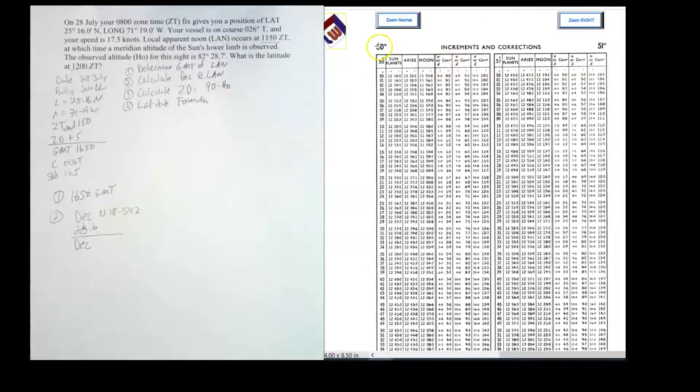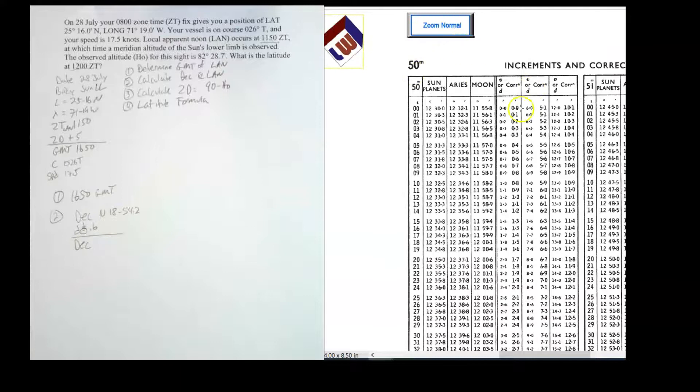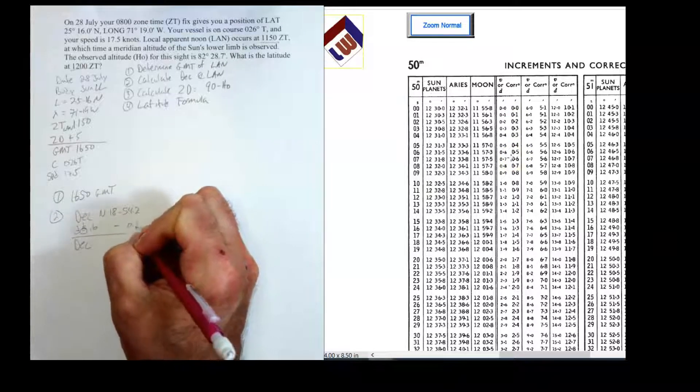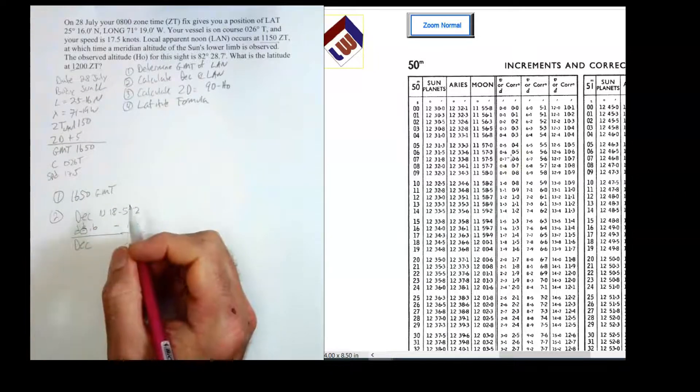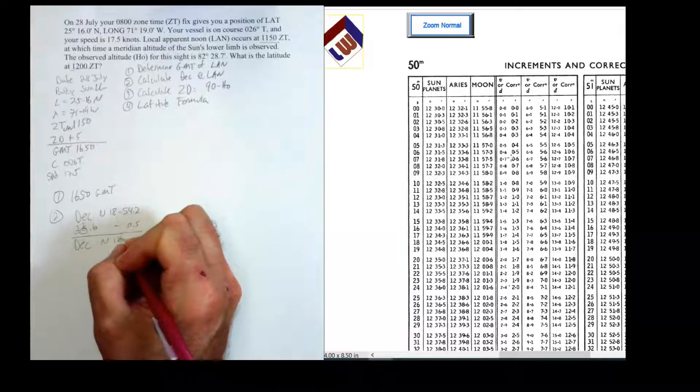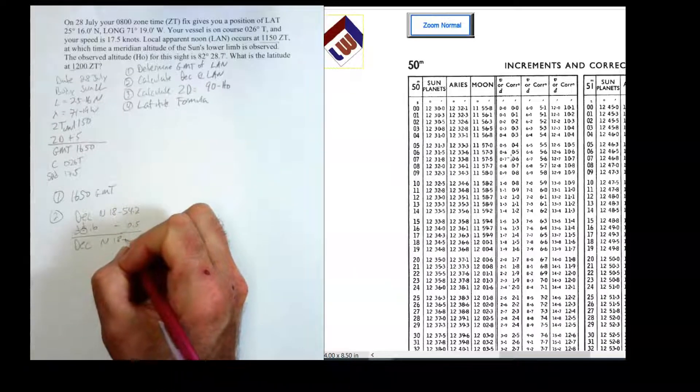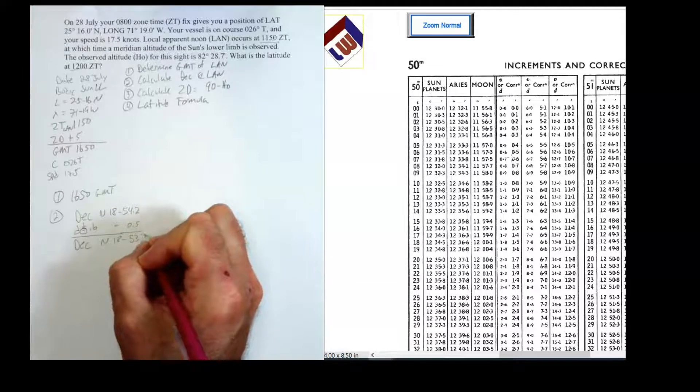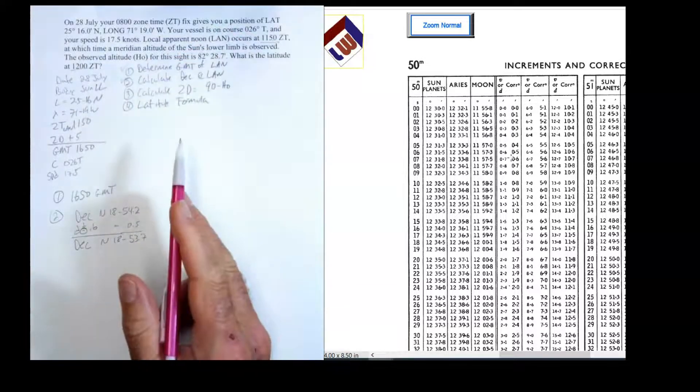So now what I'm going to do is I'm going to go to the back of the book, and I'm going to go to the 50-minute page, and I'll get the D factor for that. So here's that page, and what we're going to do now is we'll scroll in just a little bit more. So here's the 50, and our B or D factor is 0.6, so it's 0.5. So that means it's going to be minus 0.5. And when I do that math, I should end up with north 18, 53.7. So that's step one done, step two done.